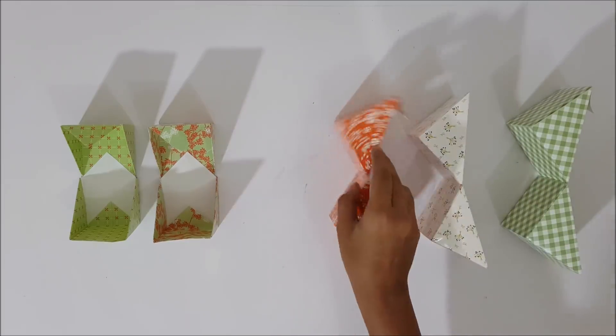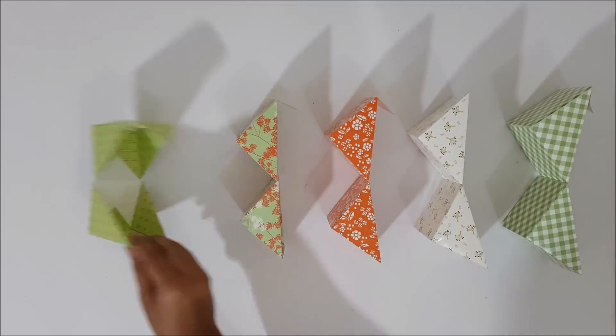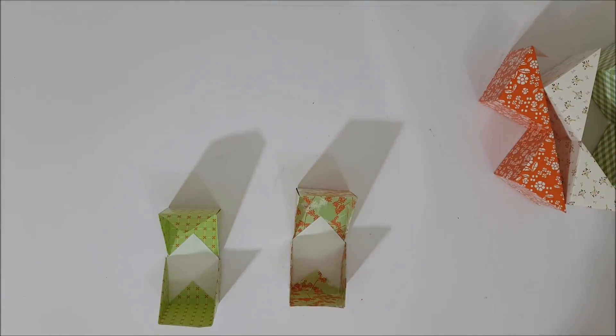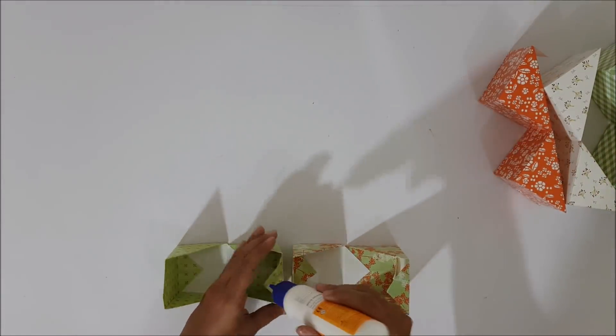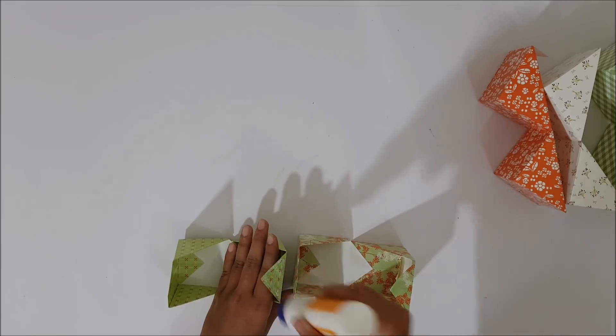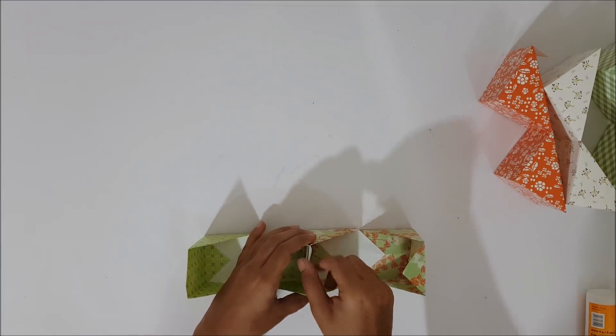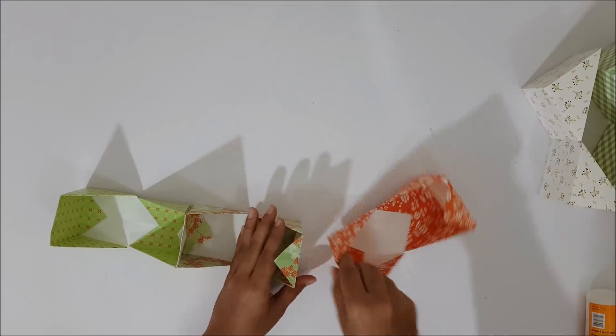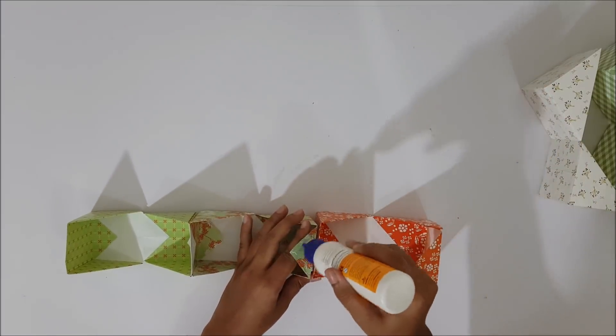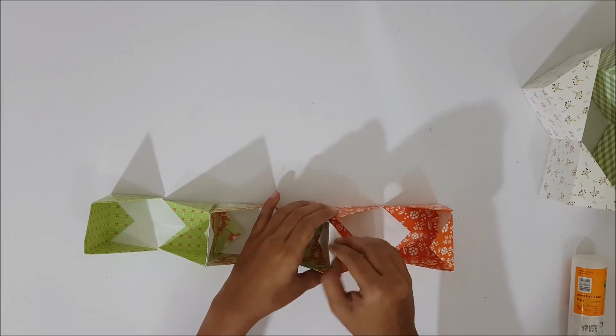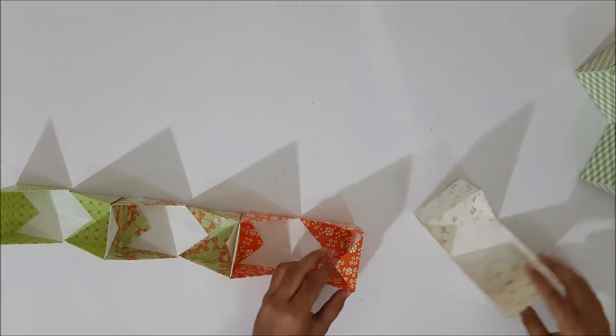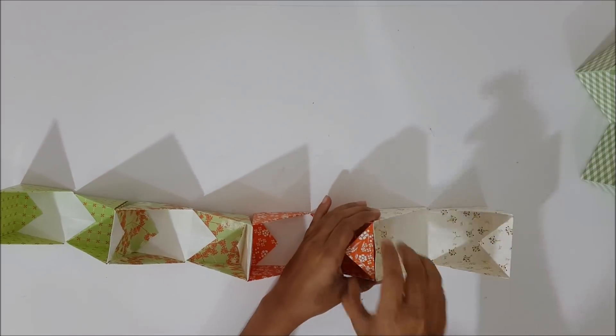When done, we will have 5 cubes of 5 different sizes. Now it's time to stick them in a line to form the shape of a caterpillar. Take the 2 smallest cubes and using the triangle on the smallest cube, stick it to the little bigger cube as shown. Now get another bigger cube and stick it to the previous cube. Repeat until all the cubes are stuck together in a line.